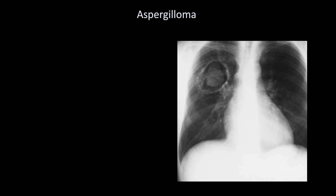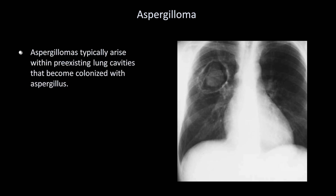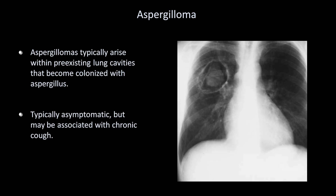One cavitary-like process worth mentioning is an aspergilloma. Aspergillomas typically arise within pre-existing lung cavities that become colonized with aspergillus. Like pneumatoceles, these can be surprisingly asymptomatic but may also be associated with chronic cough. These are also known as fungus balls.